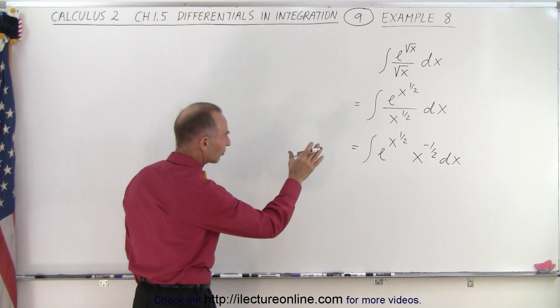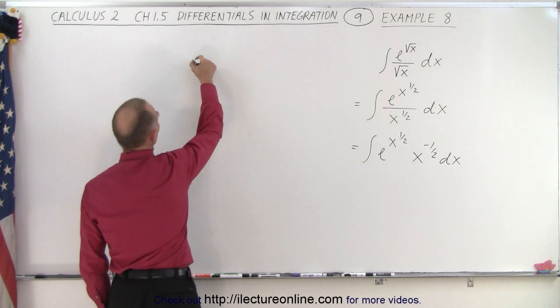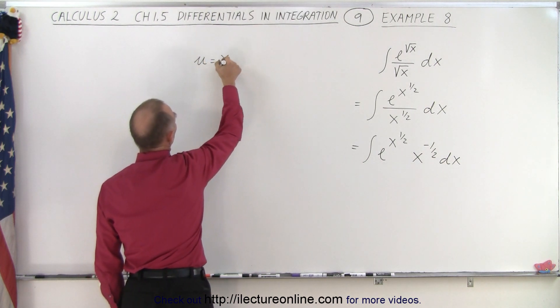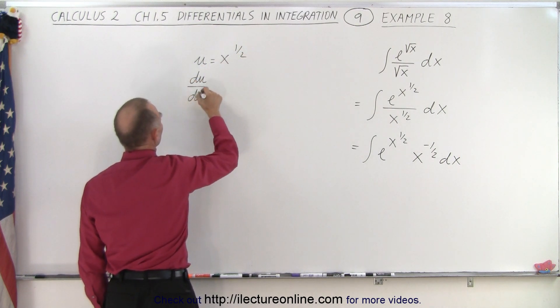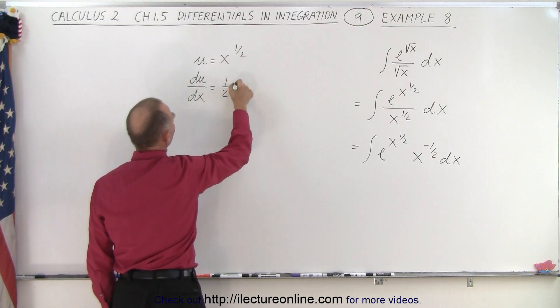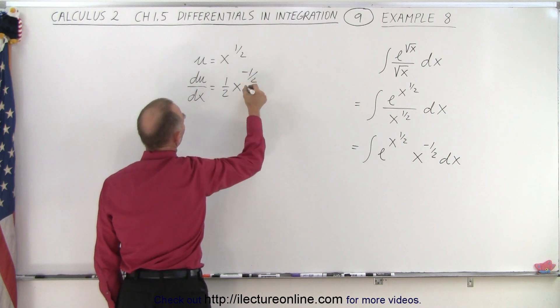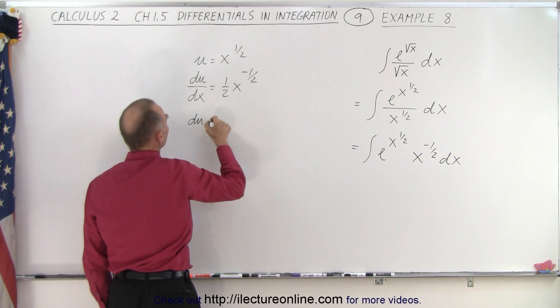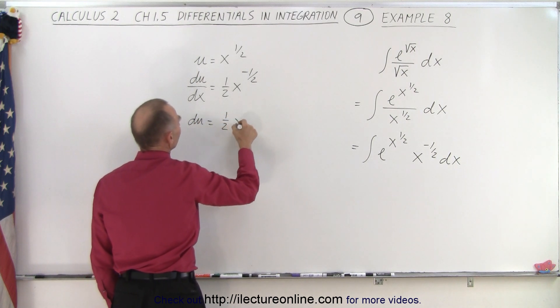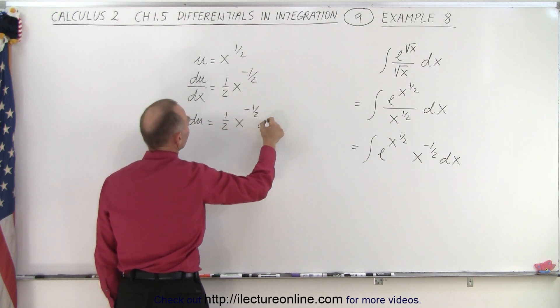We're going to call the exponent the u. So u equals x to the 1/2 power. That means that du/dx equals 1/2 x to the -1/2 power. And then if I write the dx over here, I get du equals 1/2 x to the -1/2 power times dx.